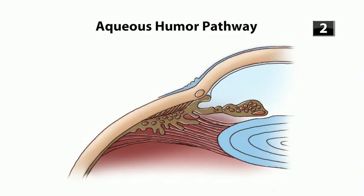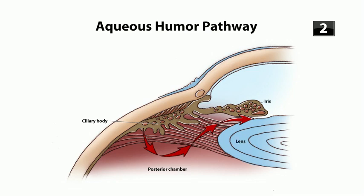Outline the flow of aqueous humor. It's formed in a capillary bed in the ciliary body, then secreted into the posterior chamber. It flows between the angle formed by the lens and the iris diaphragm, then moves into the anterior chamber, and is finally reabsorbed by the canal of Schlemm.